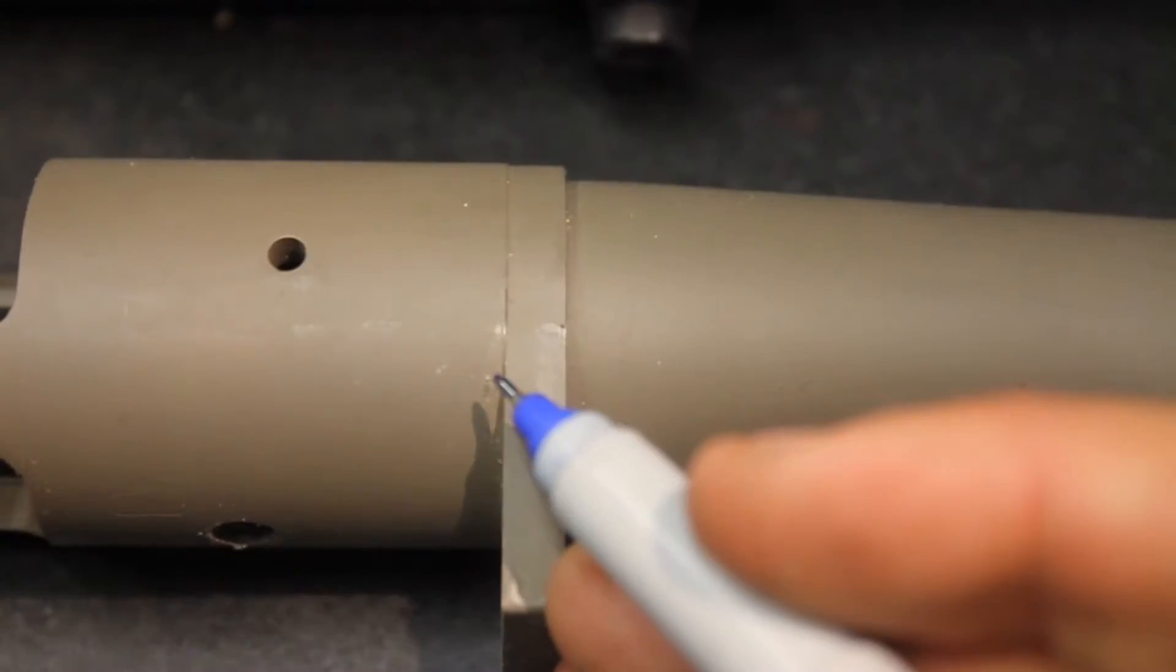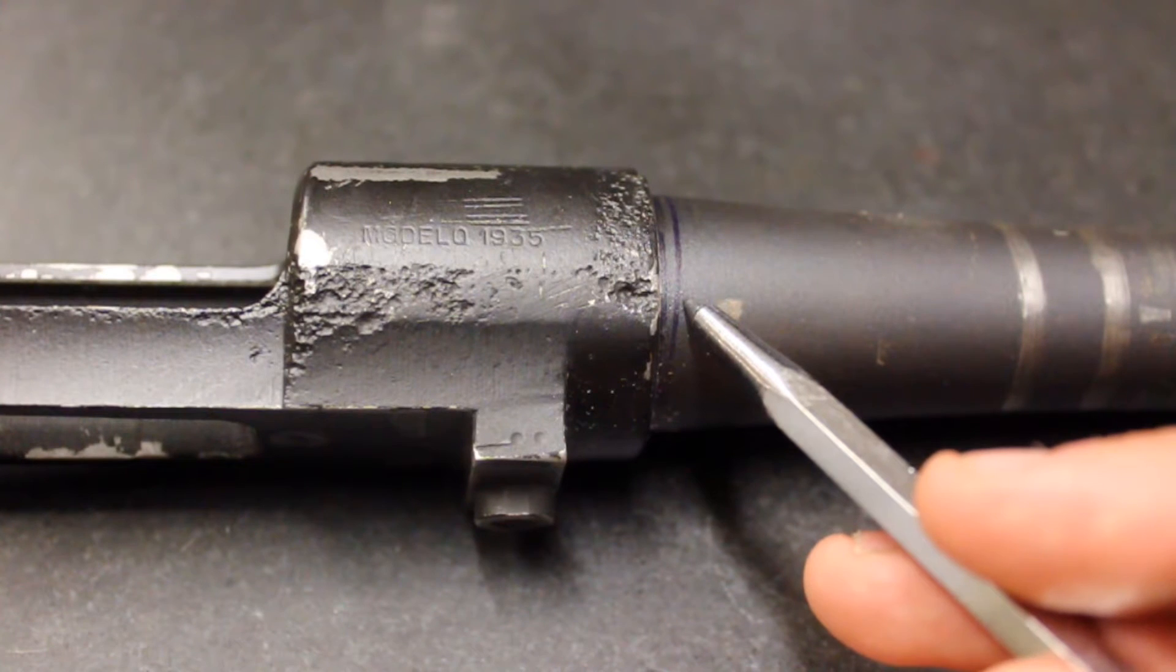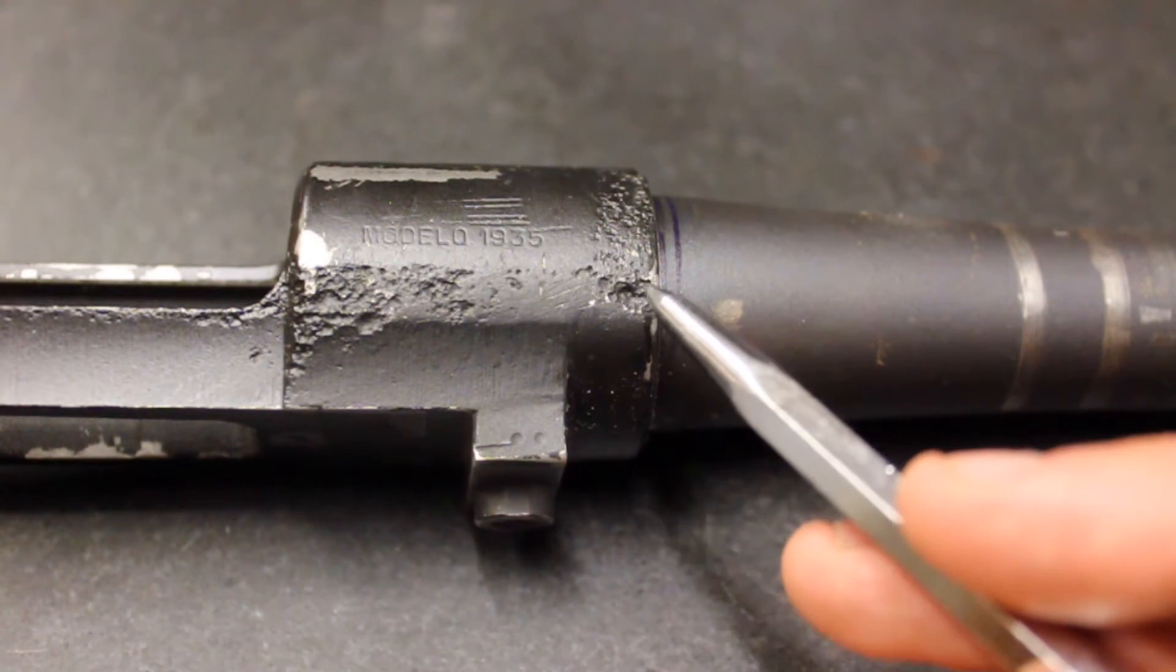In a 700-style action, you have the action made into the recoil lug, then the recoil lug to the barrel shoulder. Whereas in a Mauser-type action, the barrel shoulder goes directly to the action.